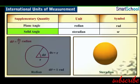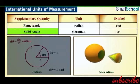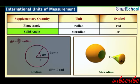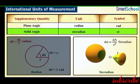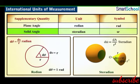Solid angle is defined as the ratio of the intercepted area dA of the spherical surface, described about the apex O as the center, to the square of its radius R, and is measured in steradian with the symbol sr. If the magnitude of the intercepted area is equal to the square of the radius, then the solid angle is equal to 1 steradian.